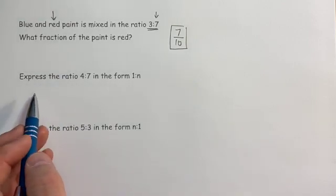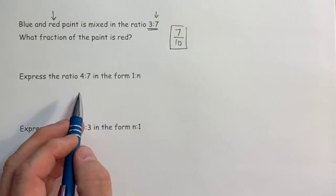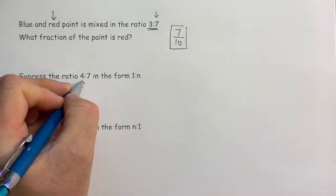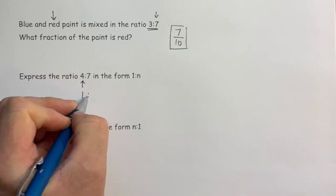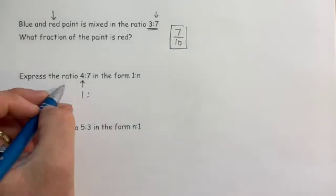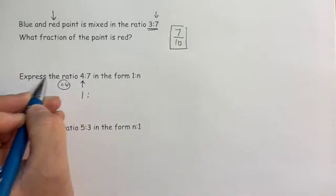In some questions however they expect you to reduce one of the parts to one, and I've got two here. The first question requiring the first term to be reduced to a one, the next question being the second term. So in order for me to reduce that four to a one I must divide by four.